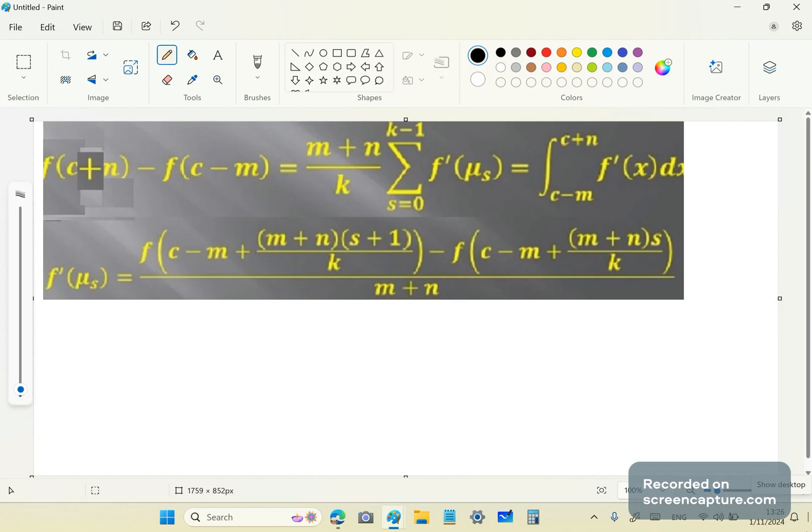Now, again, using the same logic as before, we could say that F of B minus F of A is equal to B minus A over K, this K here. Sigma K minus 1, S is equal to 0, from S is equal to 0 to K minus 1 of F prime mu sub S.